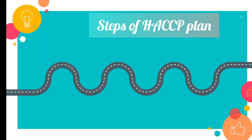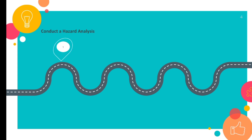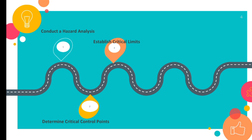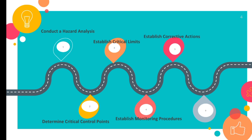Let's discuss the steps and principles of HACCP. First step is Conduct a Hazard Analysis. Second is Determine the Critical Control Points. Third is Establish Critical Limits. Fourth, Establish Monitoring Procedures. Fifth is Establish Corrective Actions. Sixth, Verification. And seventh is Record Keeping and Documentation.